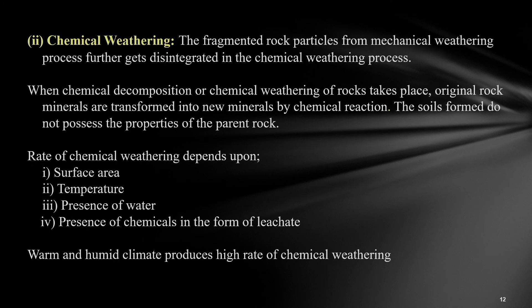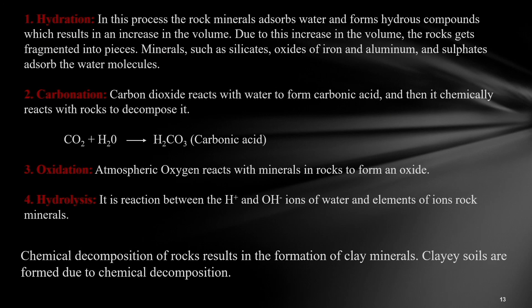In the chemical weathering process, particles get broken into finer particles because of different chemical reactions taking place inside the soil mass. When chemical decomposition of the rock takes place, the original rock minerals are transformed into new minerals by chemical reactions. The soil formed does not possess the properties of the parent rock. The rate of chemical weathering depends on surface area, temperature, presence of water, and presence of chemicals in the form of leachates. Warm and humid climate produces a high rate of chemical weathering. The different reactions that take place are hydration, carbonation, oxidation, and hydrolysis.